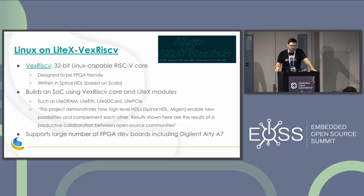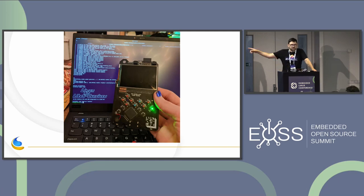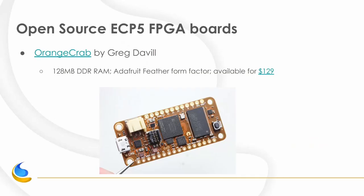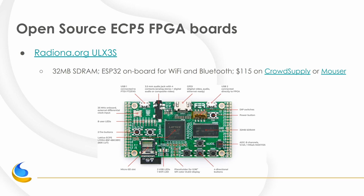Specifically, there's a project called Linux on LiteX VexRISC-V that puts a 32-bit Linux-capable core into an FPGA. The dev board I used was from the Hackaday conference, but there are a couple of open source hardware dev boards with that FPGA: one called the Radiona from Croatia — available on CrowdSupply or Mouser — and another called the Orange Crab from a company called GroupGets. Both of these can run Linux on a soft core on an FPGA using all open source tools.